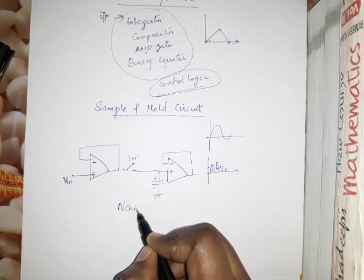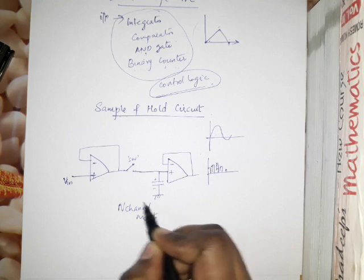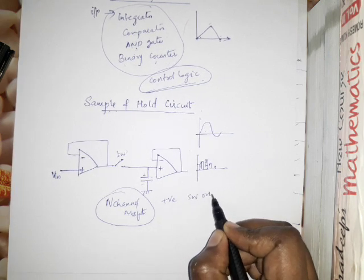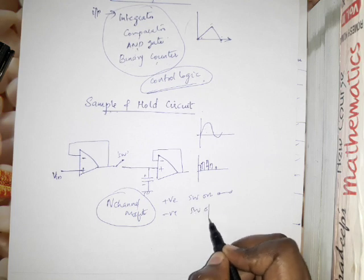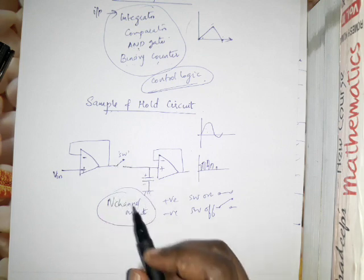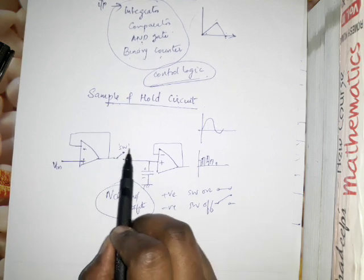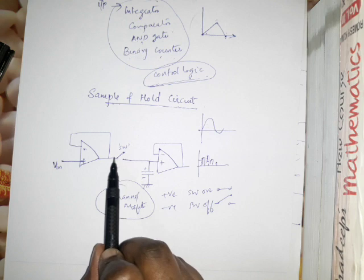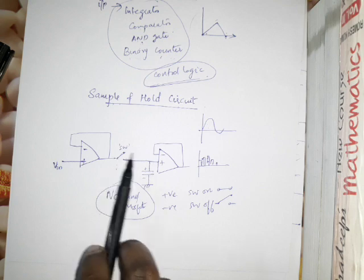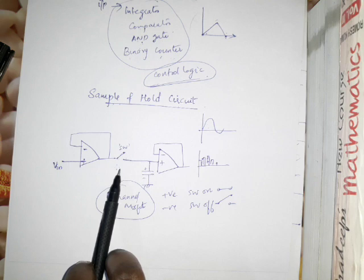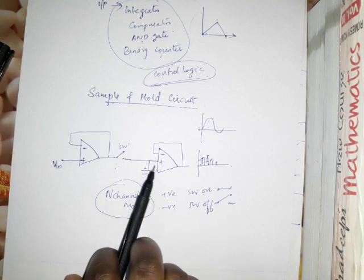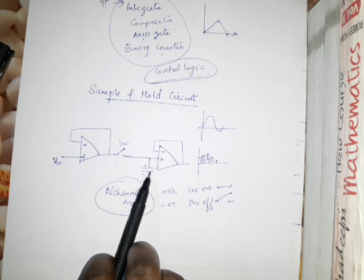This switch normally uses an N-channel MOSFET. An N-channel MOSFET requires a positive voltage to close. When a positive voltage is applied, the N-channel MOSFET closes and current flows, charging the capacitor. When a negative voltage is applied, the MOSFET opens and the capacitor value is held.